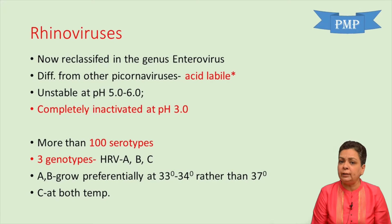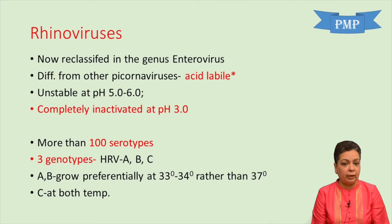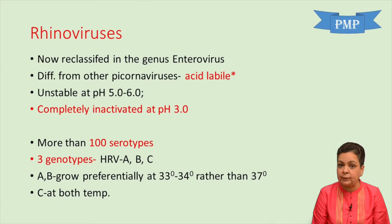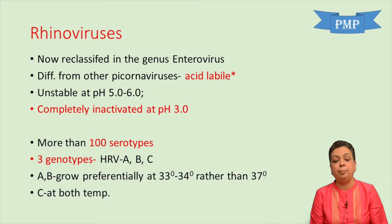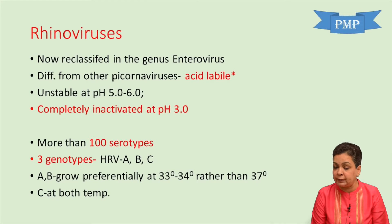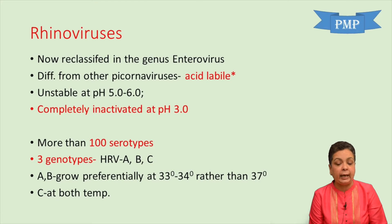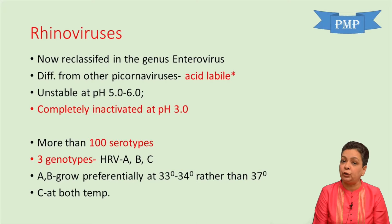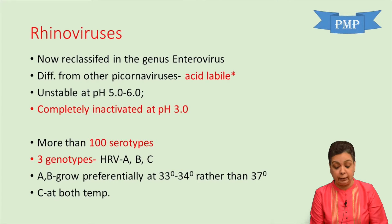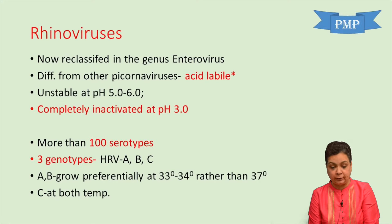There are more than 100 serotypes of rhinoviruses, and according to genome sequencing there are three genotypes: A, B, and C. Genotypes A and B preferentially grow at 33 to 34 degrees Celsius rather than at 37, while members of genotype C can grow at both temperatures. 33 to 34 degrees is the temperature of the upper respiratory tract.